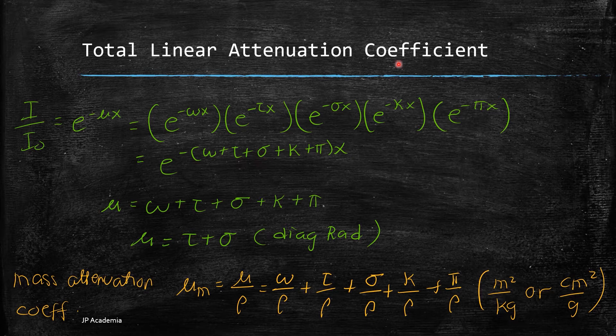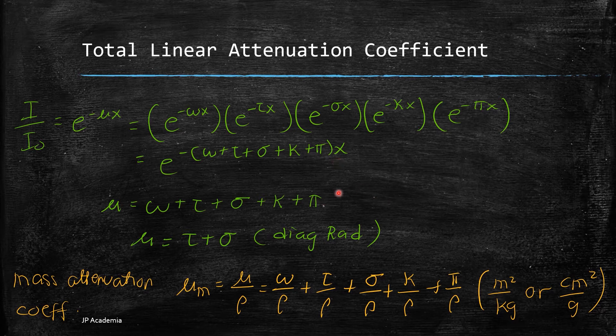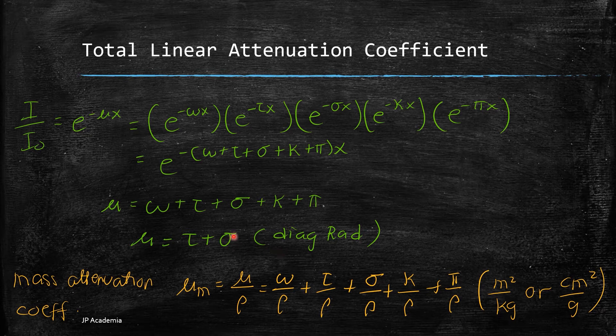We have sigma, which refers to the Compton scattering. We have kappa for pair production. And we have pi for photo disintegration. Thus, we have this final expression for total linear attenuation coefficient. In terms of diagnostic radiology, we mostly have photoelectric absorption and Compton scattering. Other photon interactions are commonly negligible.